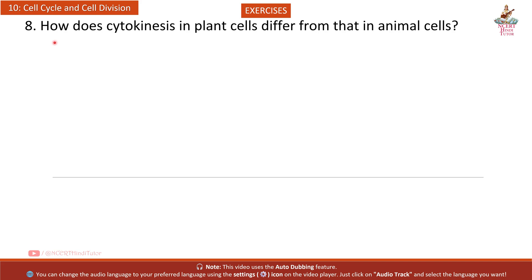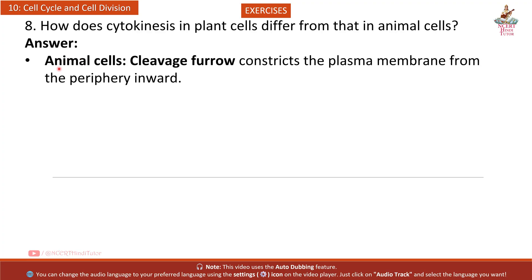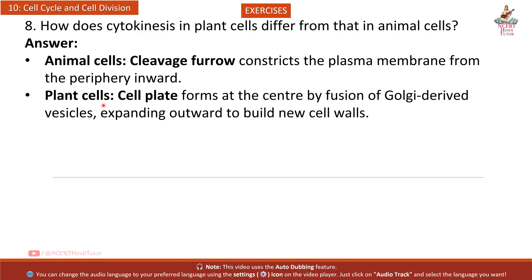Question 8: How does cytokinesis in plant cells differ from that in animal cells? Animal cells: cleavage furrow constricts the plasma membrane from the periphery inward. Plant cells: cell plate forms at the center by fusion of Golgi-derived vesicles, expanding outward to build new cell walls.